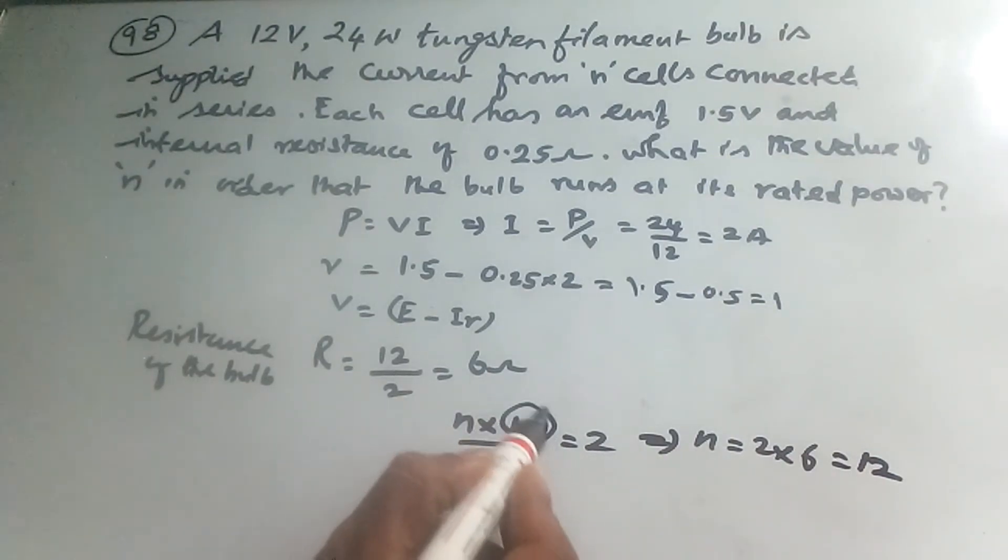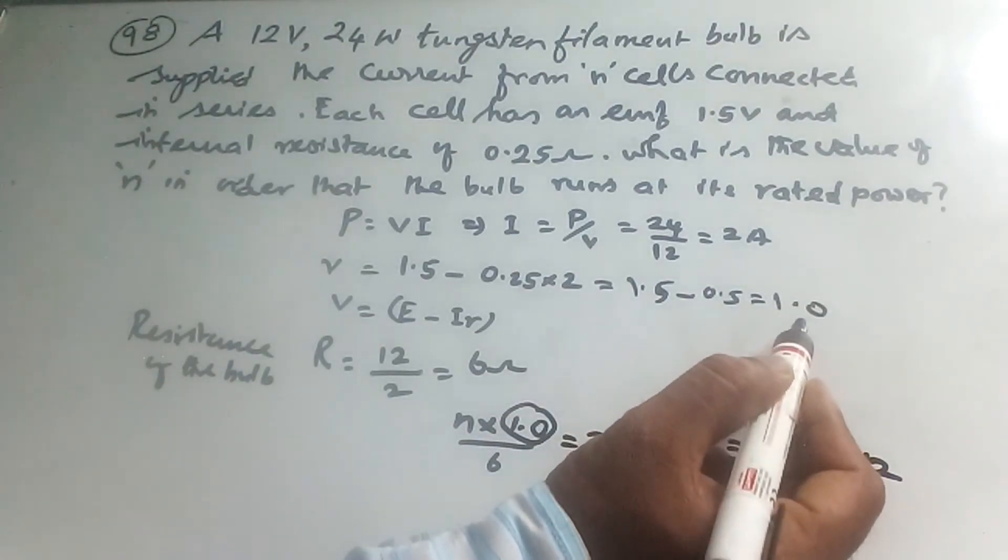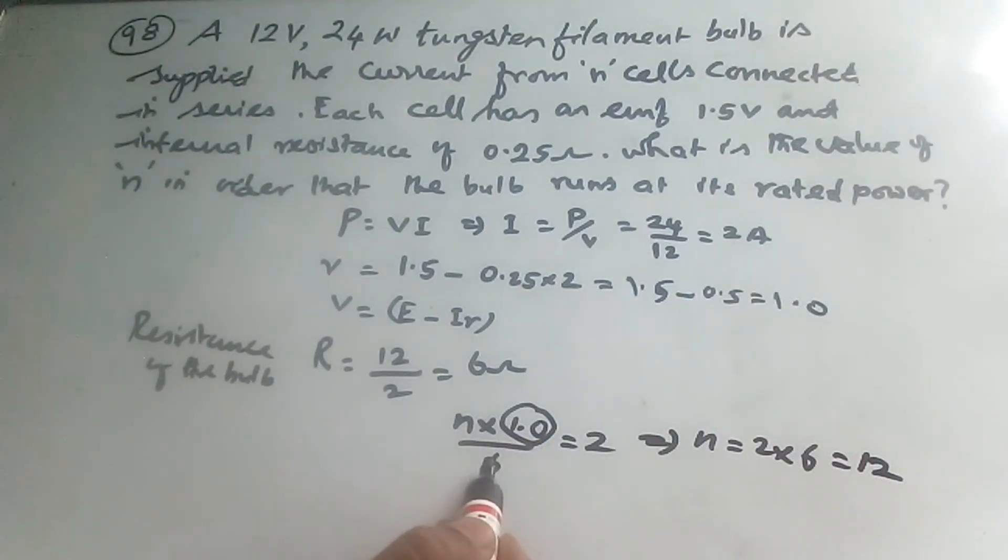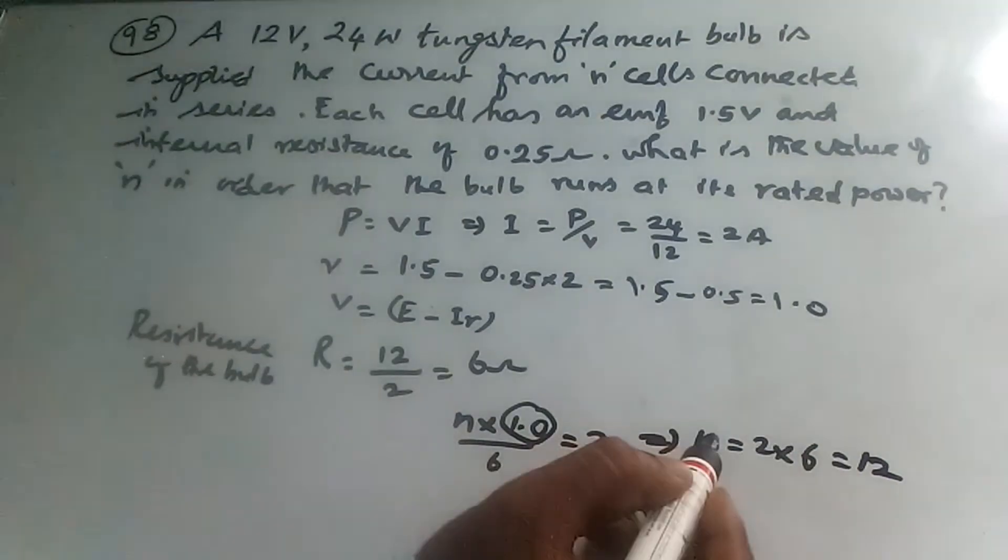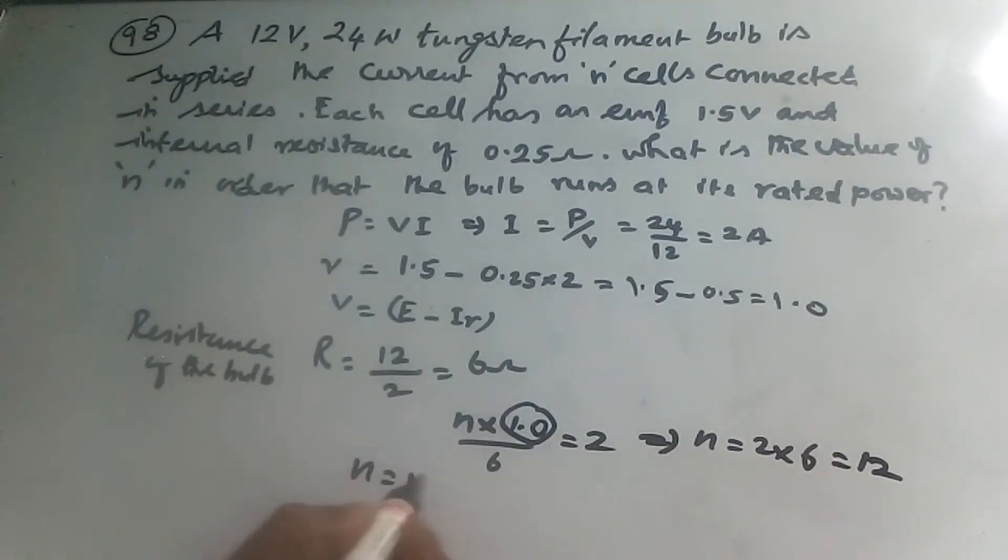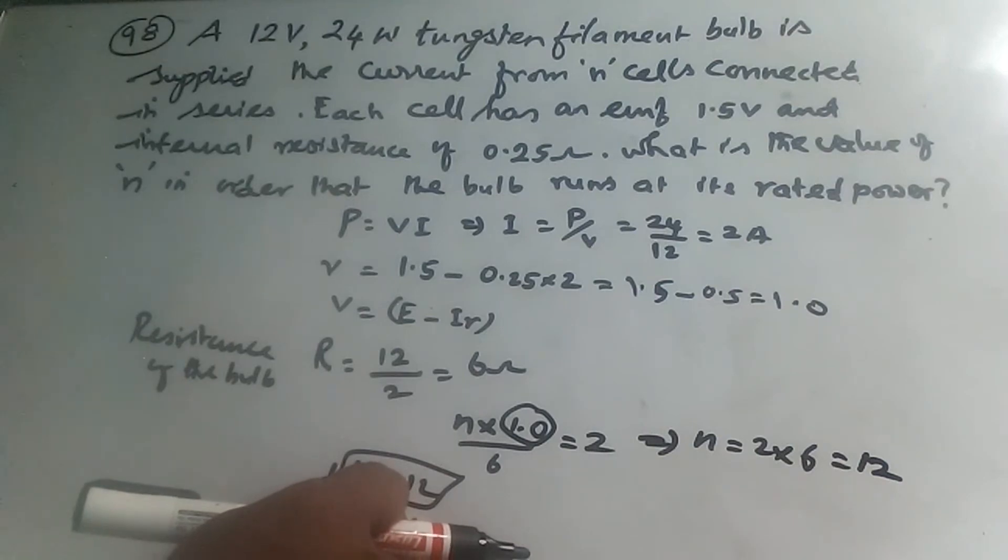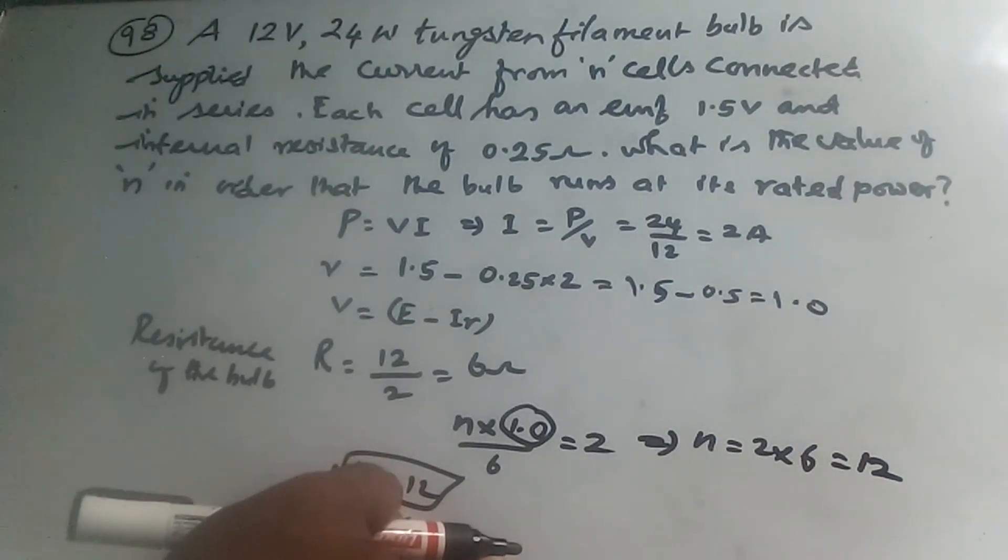N × 1.0 = 12, so n = 12. Therefore, 12 cells connected in series, each with EMF 1.5V, are needed so the bulb runs at its rated power.